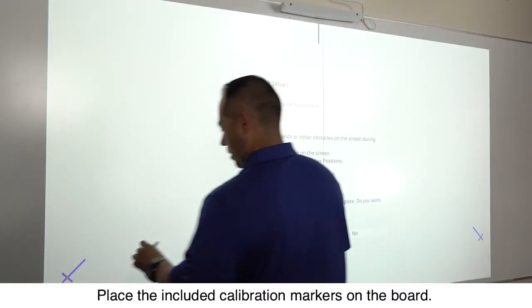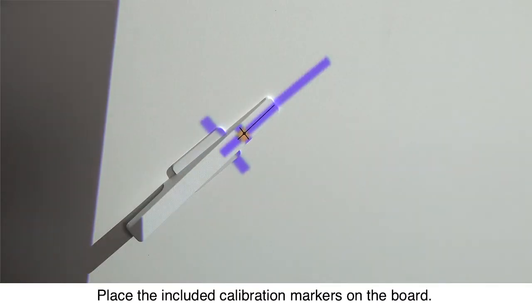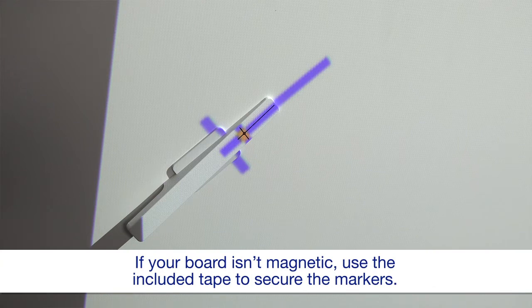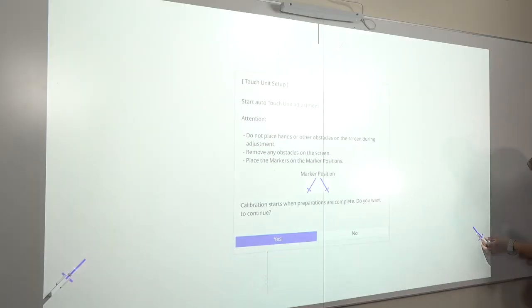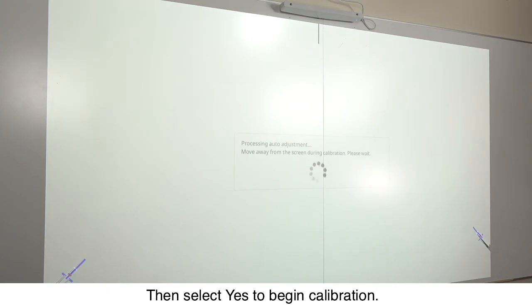Place the included calibration markers on the board. Then select Yes to begin calibration.